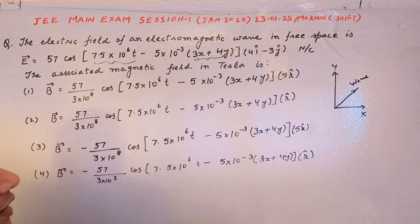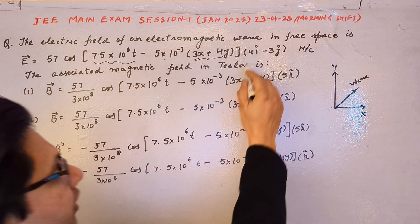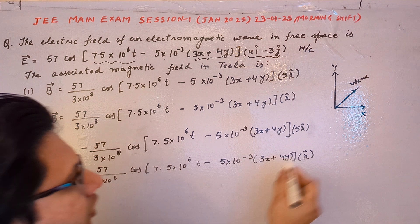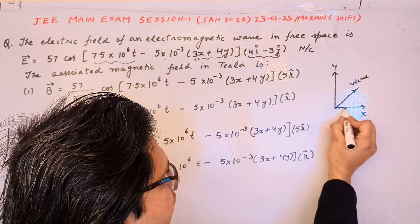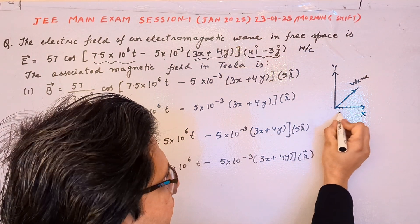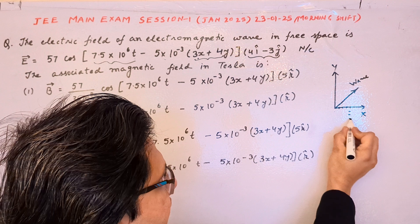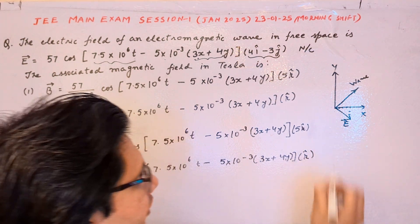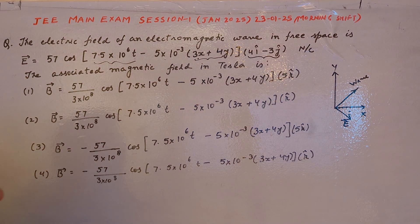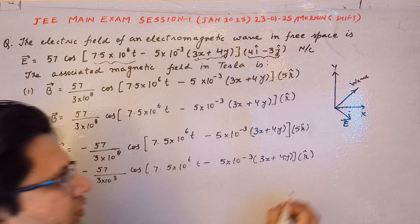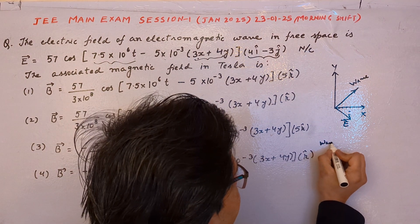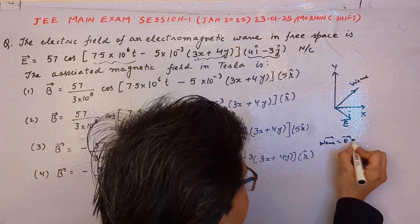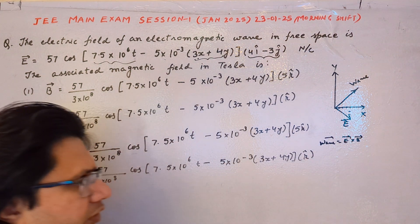The direction of the electric field is given by the vector 4i minus 3j. This means 4 along the x-axis and 3 along the negative y-axis, so this is the direction of the electric field. We also know that the direction of wave propagation is given by E cross B.